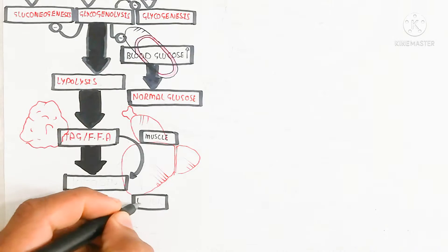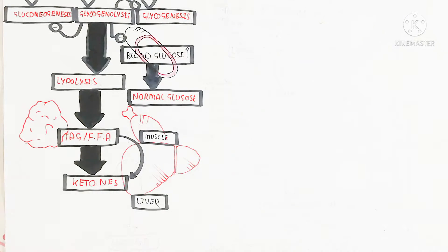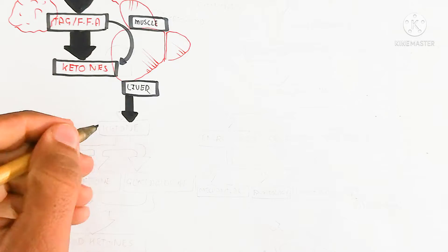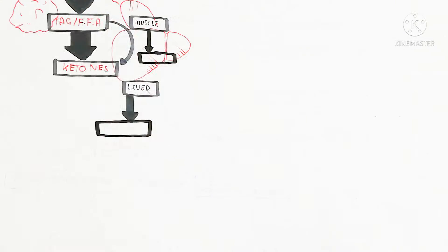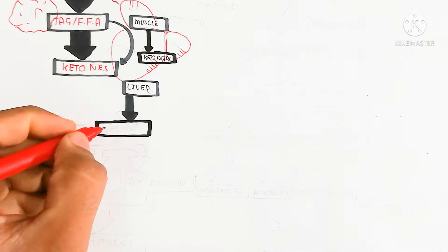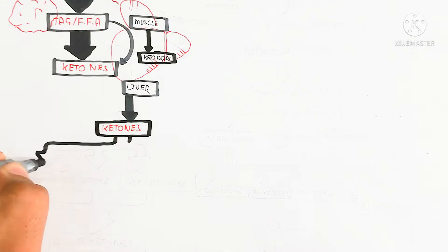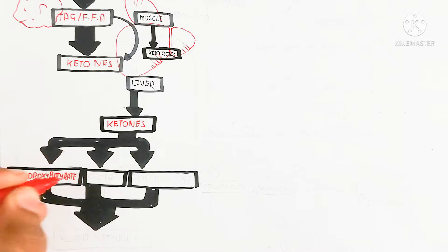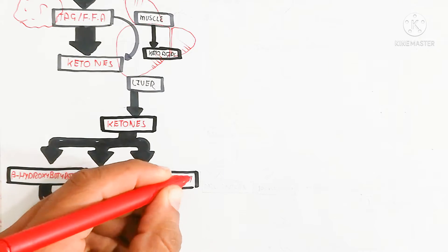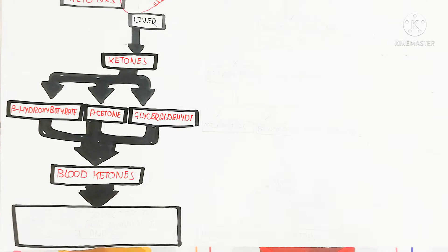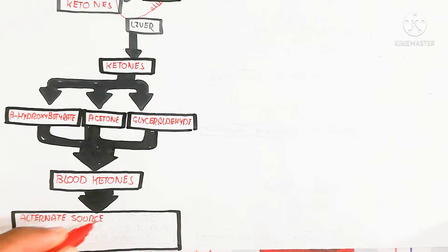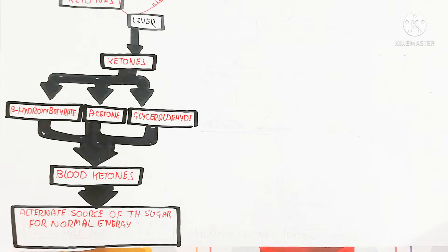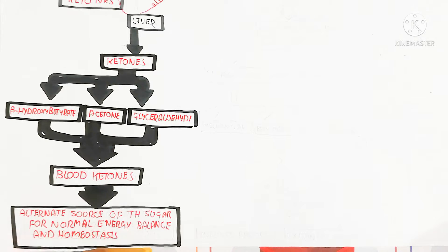Lipolysis will occur after the passing days, once normal blood glucose level is restored. Lipolysis begins after the depletion of glycogen, to produce free fatty acids and triacylglycerol from adipose tissue. Muscle cells produce keto acids, and the liver also uses these free fatty acids to produce ketones — a process known as ketogenesis. Ketones serve as an alternate source of energy when sugar is not present, but excess ketones will lead to ketoacidosis. The major ketones are beta-hydroxybutyrate, acetone, and acetoacetate, and excess accumulation can be poisonous, though the excretory system keeps levels normal. Blood ketone levels increase as an alternate energy source for normal energy balance and homeostasis.